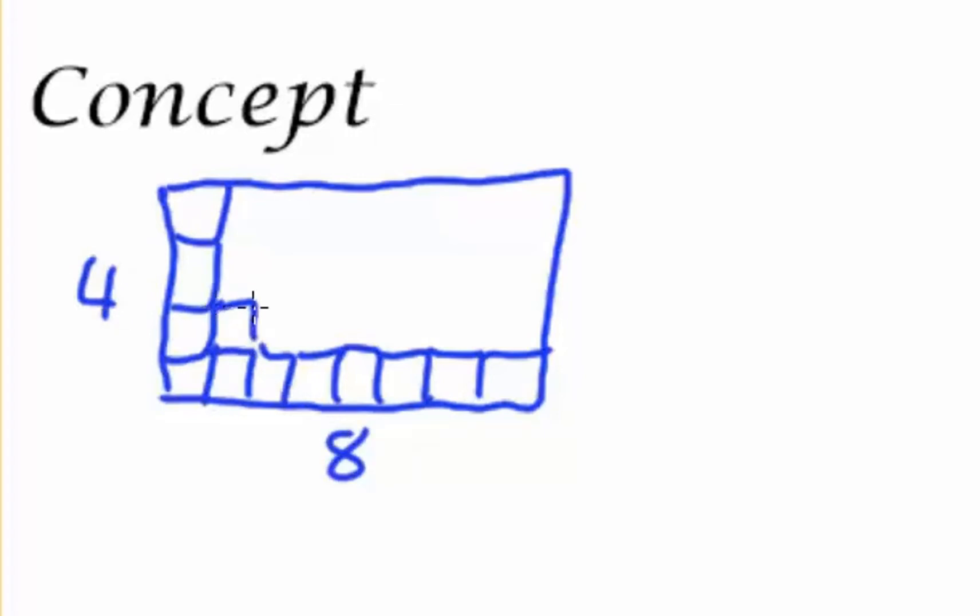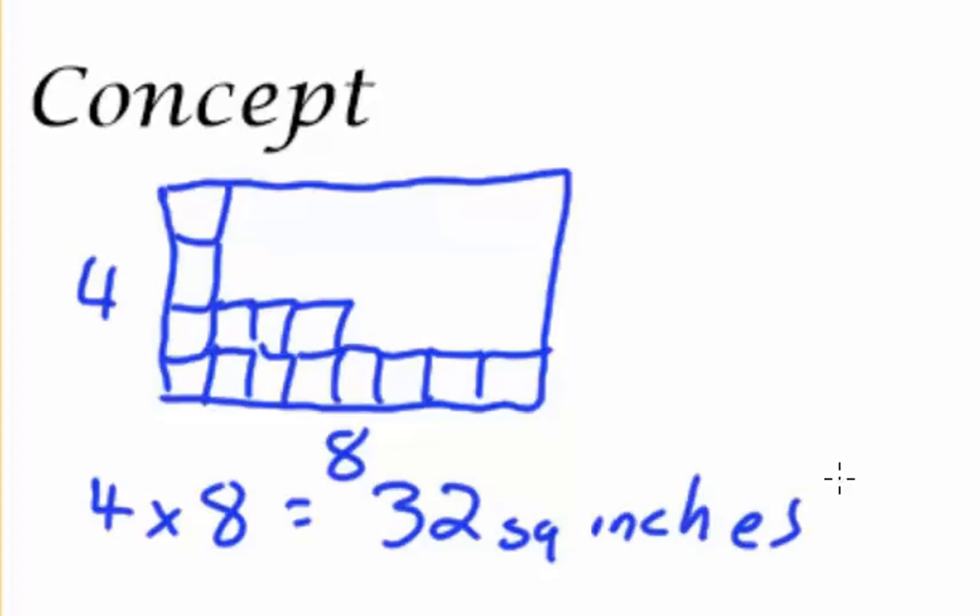Well, rather than count the boxes by drawing them all out, I can set up a multiplication problem. If I have 4 rows of boxes and 8 columns of boxes, I can multiply that to get an answer of 32. 4 times 8 will give me 32 square boxes, or in this case, 32 square inches.